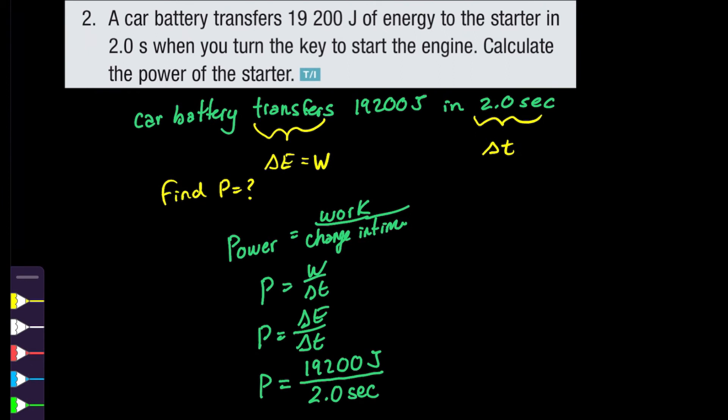Notice that the units are correct: we measure the change in energy in joules and the change in time in seconds, so the power should be in joules per second, which is watts. Once you calculate this, you get approximately 9,600 watts.